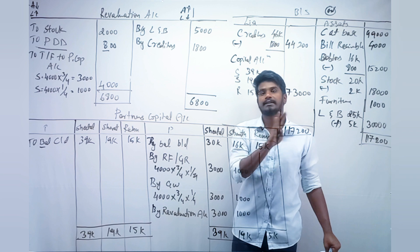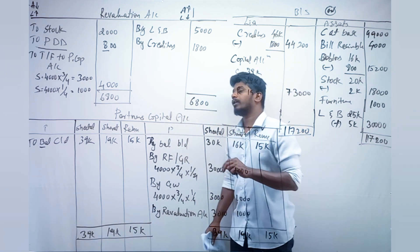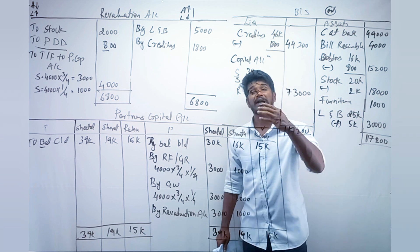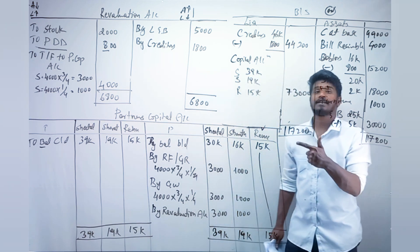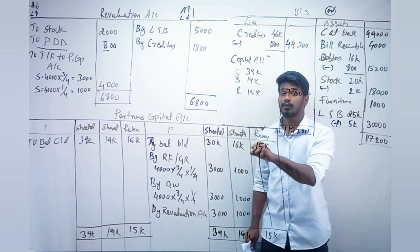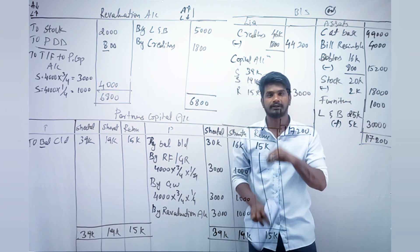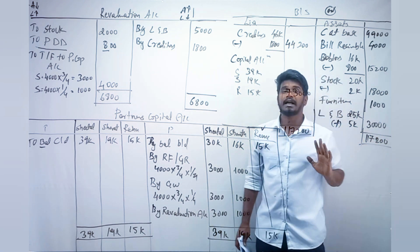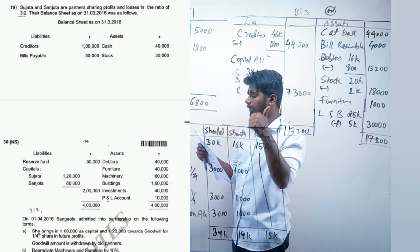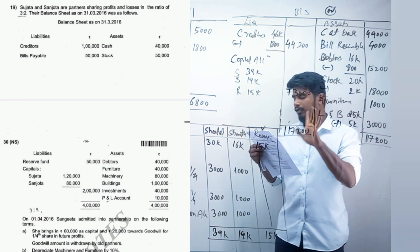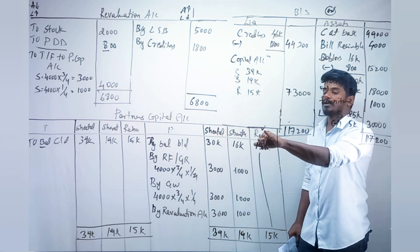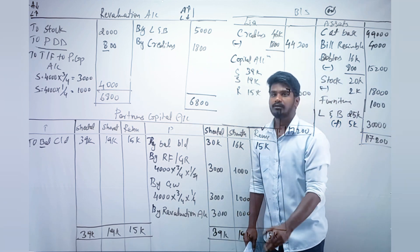Next, move to the partners capital account. There are four things to record: first, balance brought down; second, reserve fund or general reserve from the balance sheet; third, goodwill; and fourth, the revaluation balance. For balance brought down, look at the balance sheet — Sujata: 1,20,000; Sanjota: 80,000; new partner's capital: 60,000. Write these amounts. In the new partner's column, leave the reserve fund row blank.